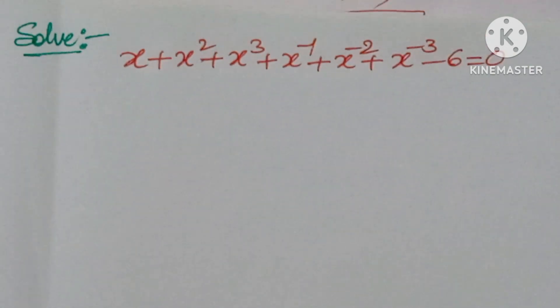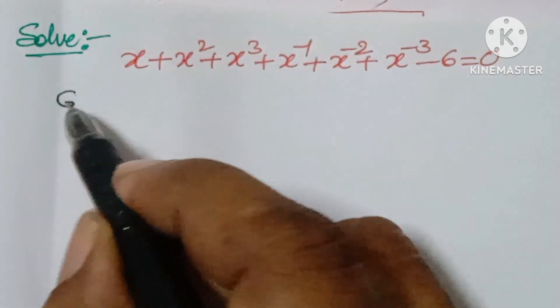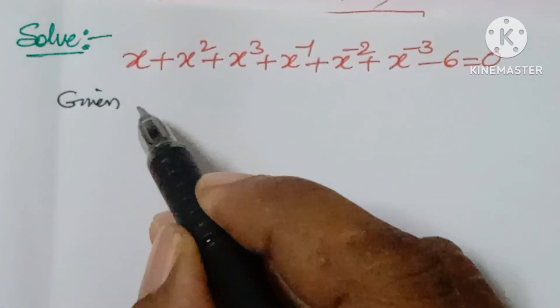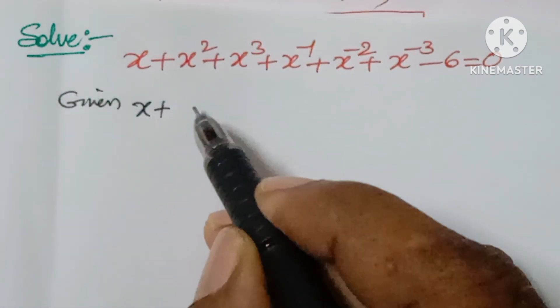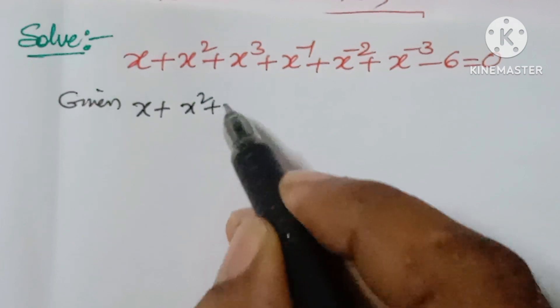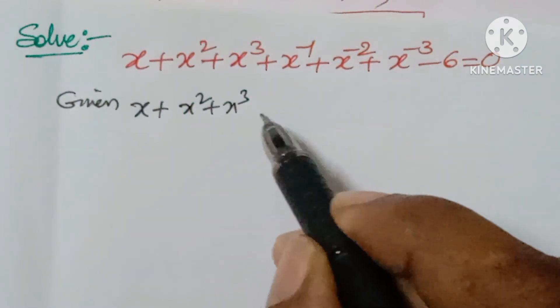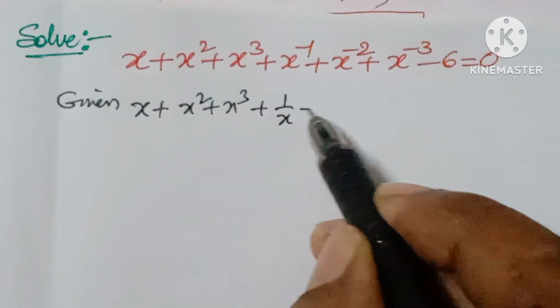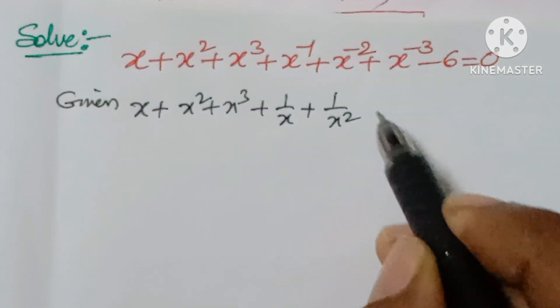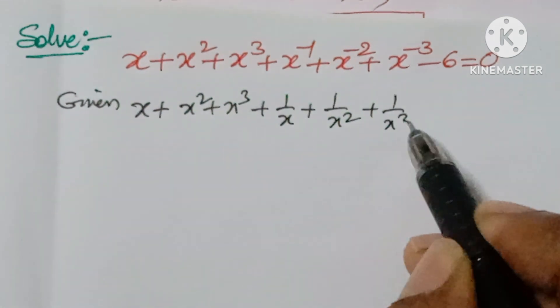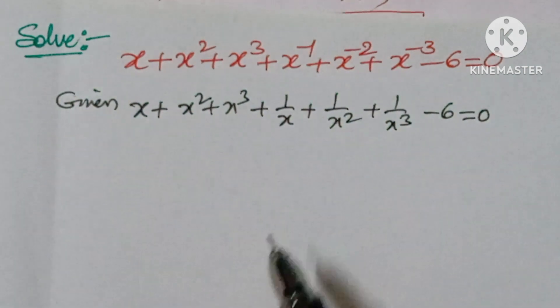Given: x plus x squared plus x cubed plus 1 by x plus 1 by x squared plus 1 by x cubed minus 6 equal to 0.